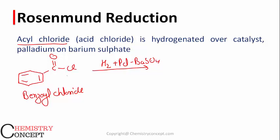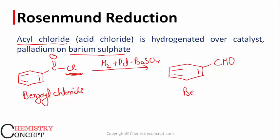The catalyst is poisoned just to limit or control the reduction. BaSO4 acts as a poison — something which limits or reduces the activity of a catalyst. Palladium and hydrogen carry out the reduction, while BaSO4 limits it; otherwise it would give hydrocarbons directly. So the Cl comes out and what we get is –CHO, giving us benzaldehyde.